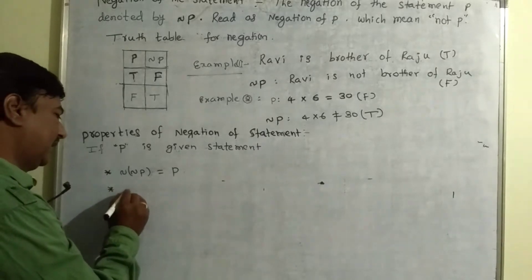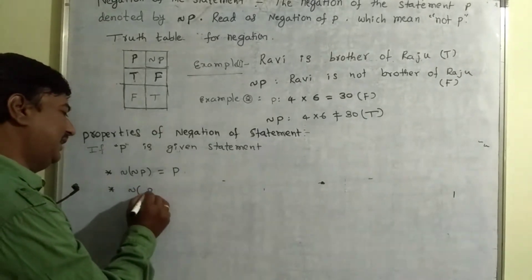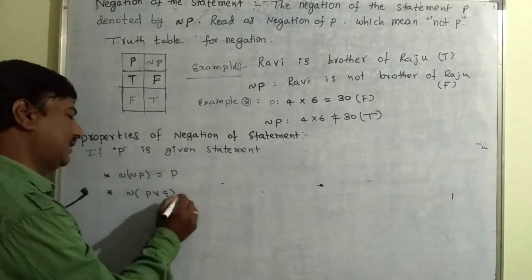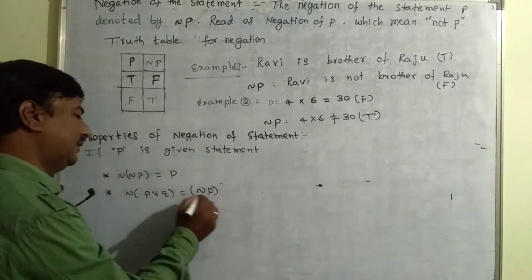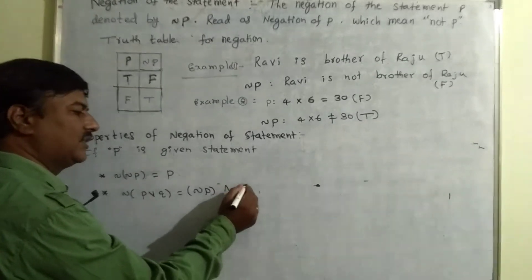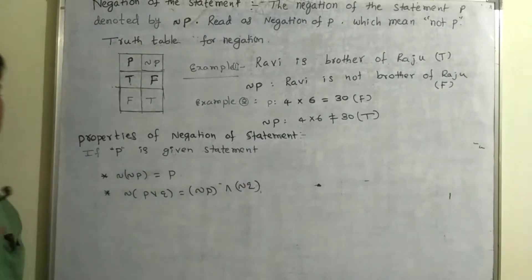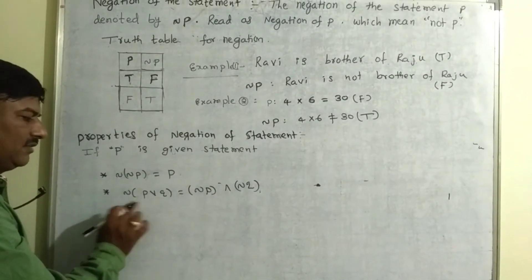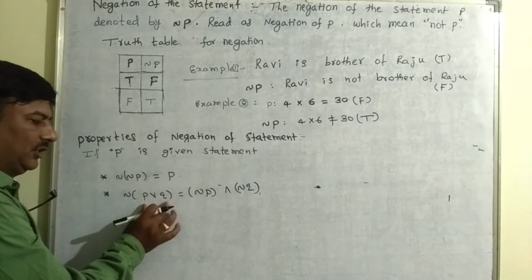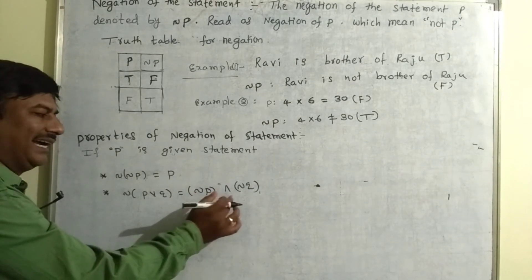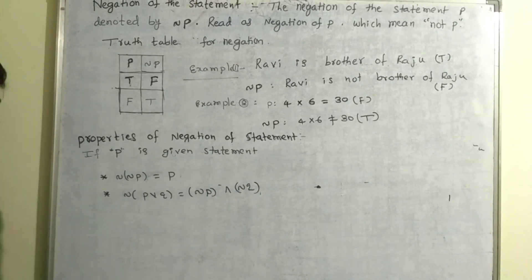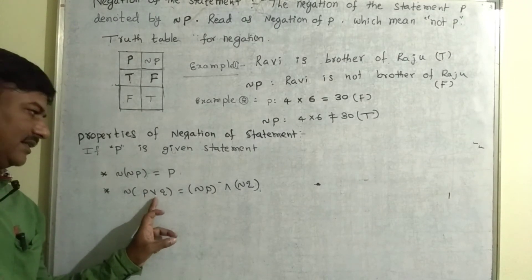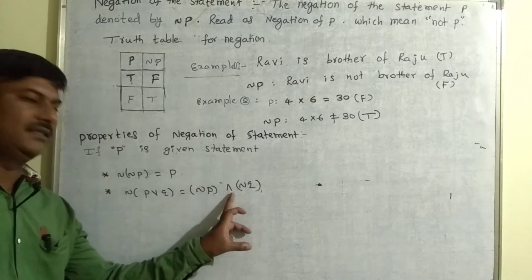Property number 2: the negation of P or Q is equals to negation of P and negation of Q. Here, 'or' is the disjunction symbol and 'and' is the conjunction symbol.